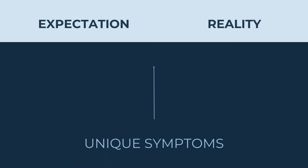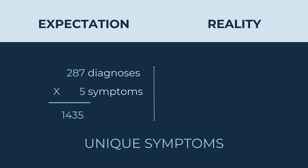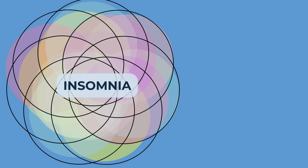Symptom overlap. The 280 diagnoses in the DSM have an average of five symptoms each. If each disorder had unique symptoms, we would expect to see a total of 1,435 unique symptoms in the DSM. However, there are only 628 unique symptoms. This further blurs the boundaries between diagnoses and inflates their surface similarity. For example, insomnia is a symptom of 22 different diagnoses.